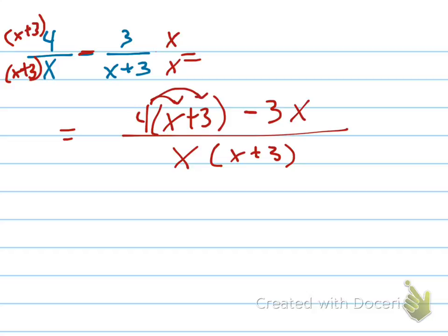Distribute that 4 in. Simplify. That's going to be 4x. 4x minus 3x is 1x plus the 12 when you distributed that in.